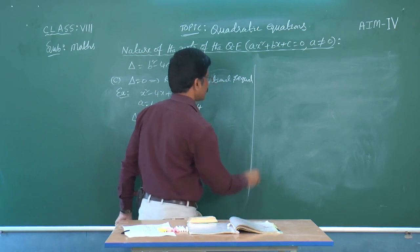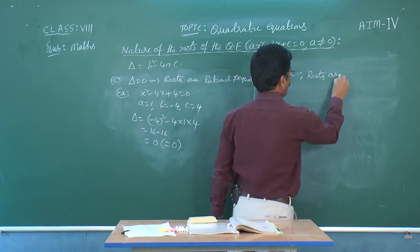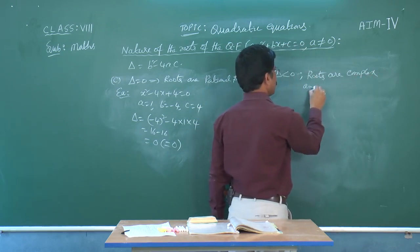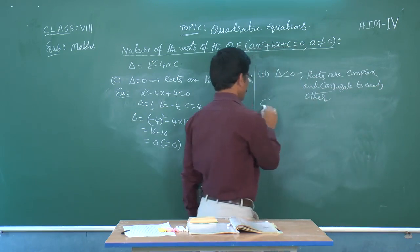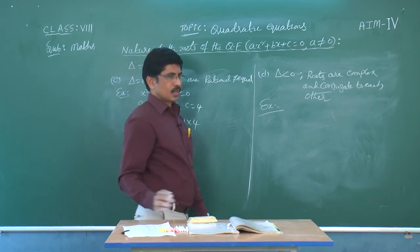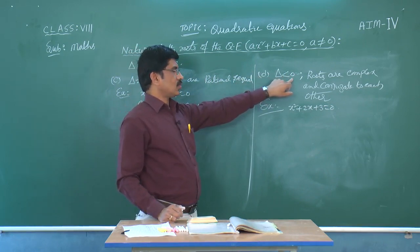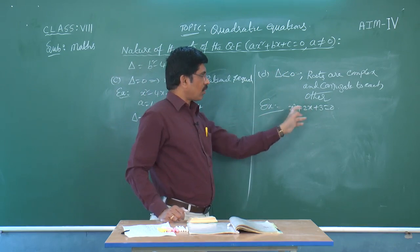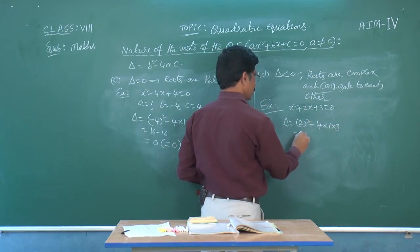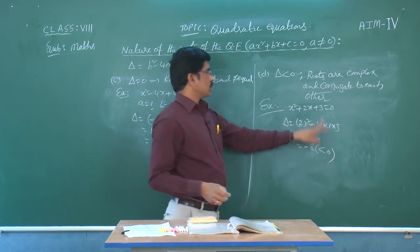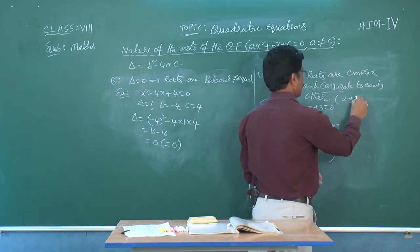Last sub-case: if delta is less than 0, the roots are complex and conjugate to each other. Taking one example: x squared plus 2x plus 3 equals 0. Delta equals 2 squared minus 4 into 1 into 3, equals 4 minus 12, equals minus 8, which is less than 0. So the roots are complex and conjugate to each other, that is alpha plus or minus i·beta.